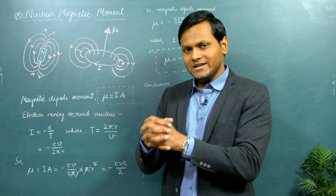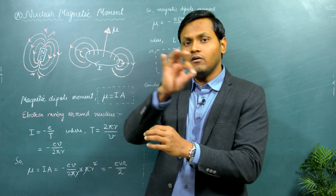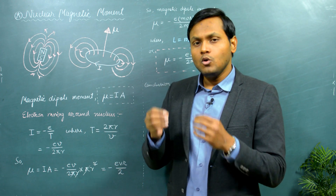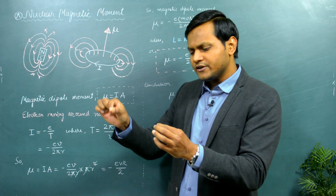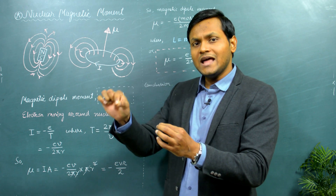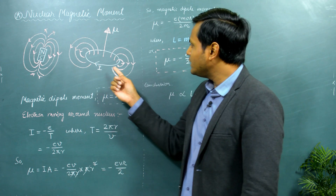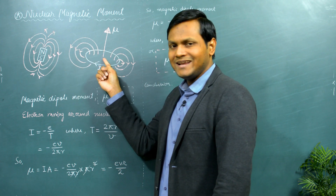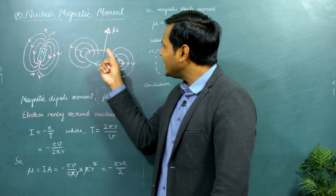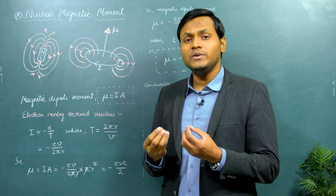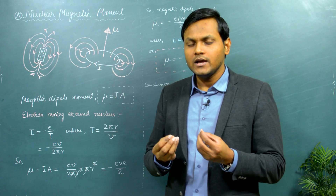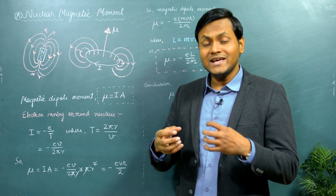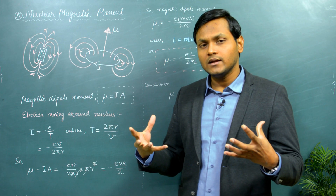Inside an atom you have a nucleus at the center and there is an electron revolving around it. Since electrons are charged particles of their own, we can consider the motion of the electron around a nucleus to be that of the flow of a current. In the same way that if there is a current flowing in a circular loop there is a magnetic moment associated with that circular loop...